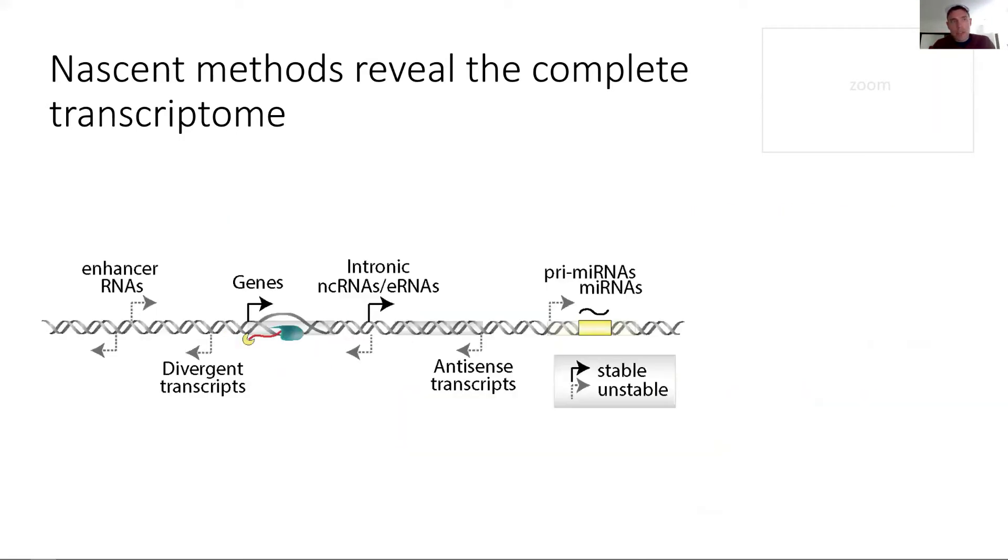Given that it captures nascent transcription, CSRNAseq does not only capture genes or stable non-coding RNA but also enhancer RNAs and a lot of other unstable transcripts that were discovered in multitude. Let's just summarize them as divergent transcripts, antisense transcripts, and of course also pre-microRNAs like microRNAs before they're processed.